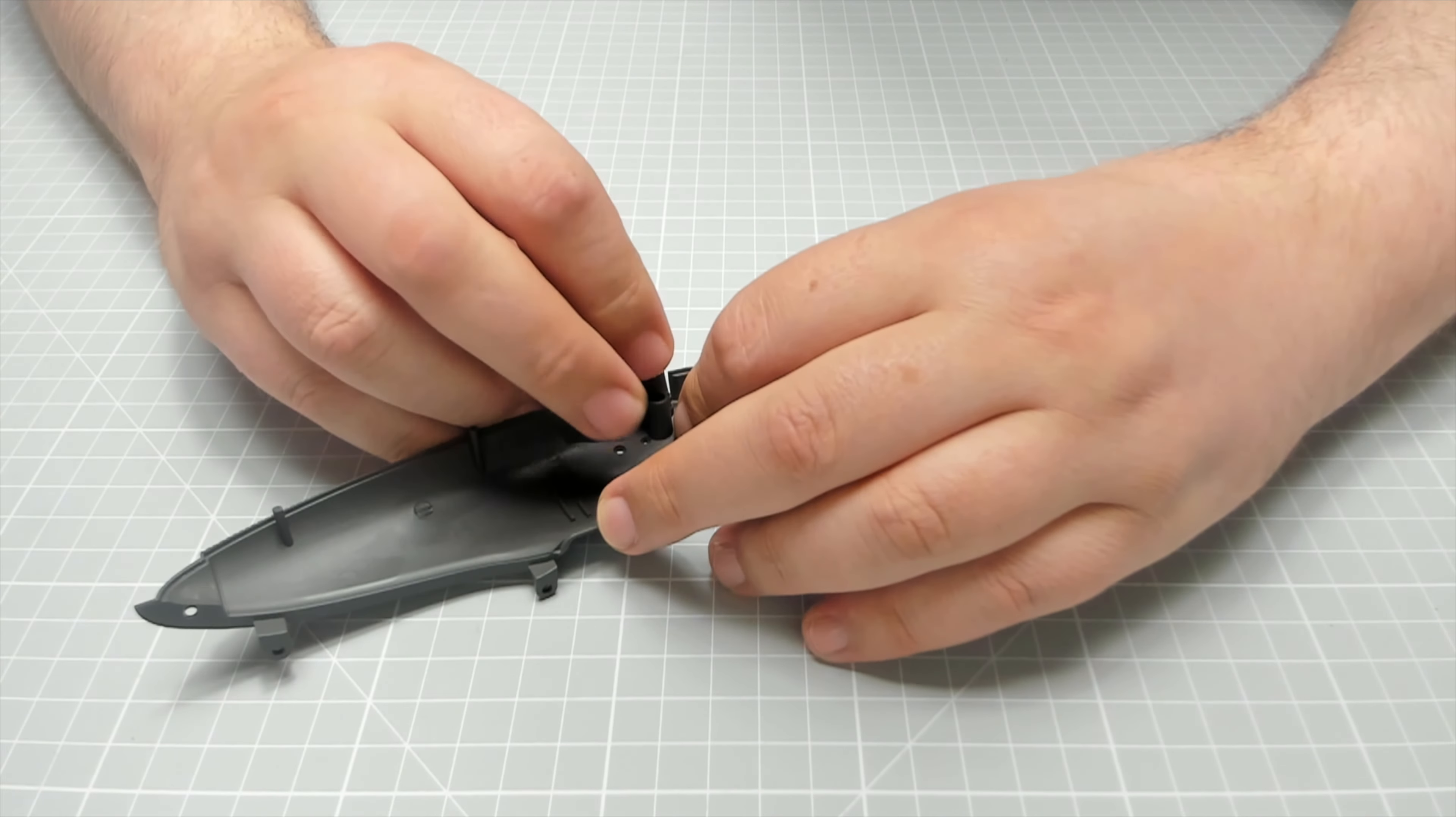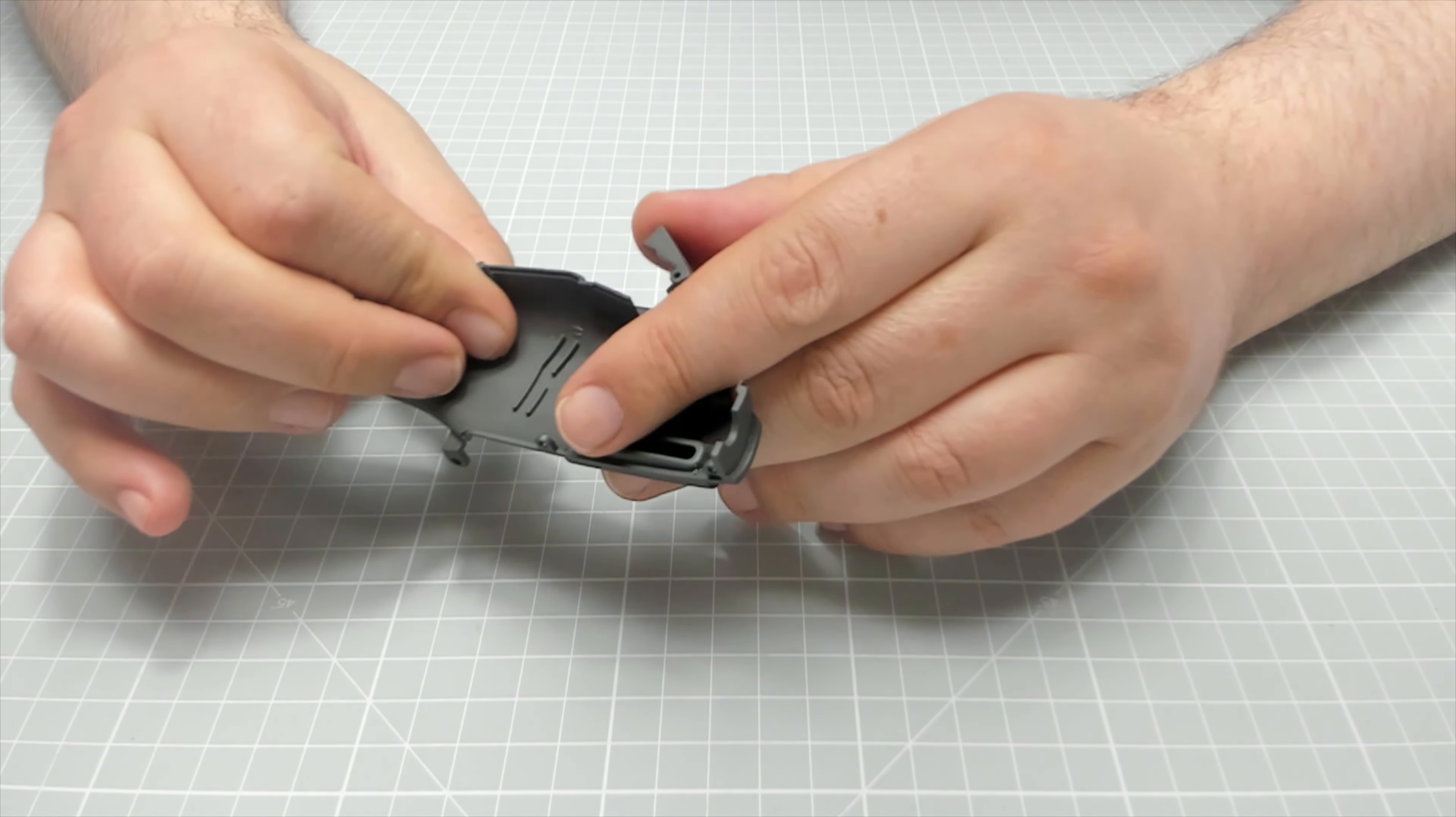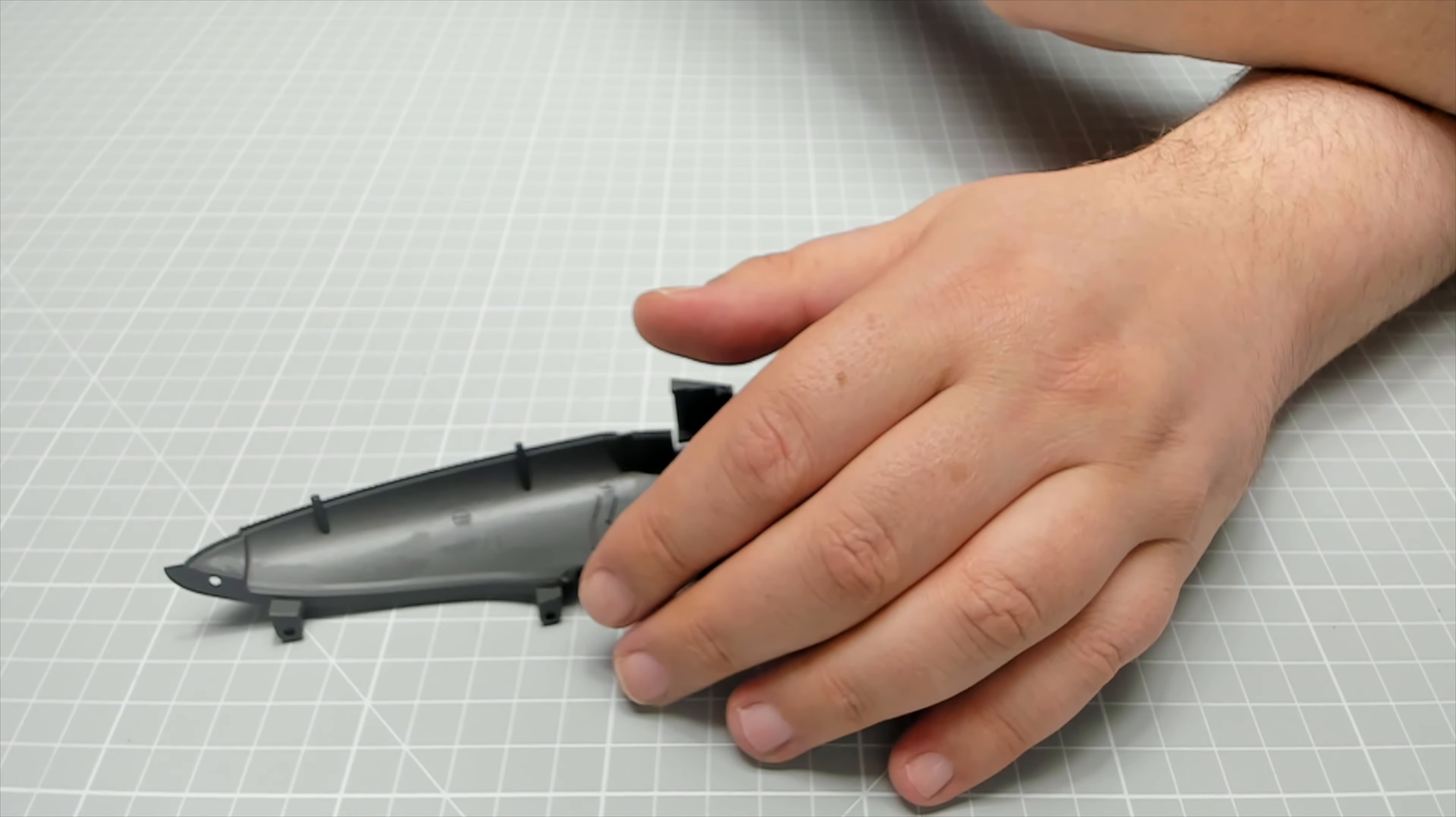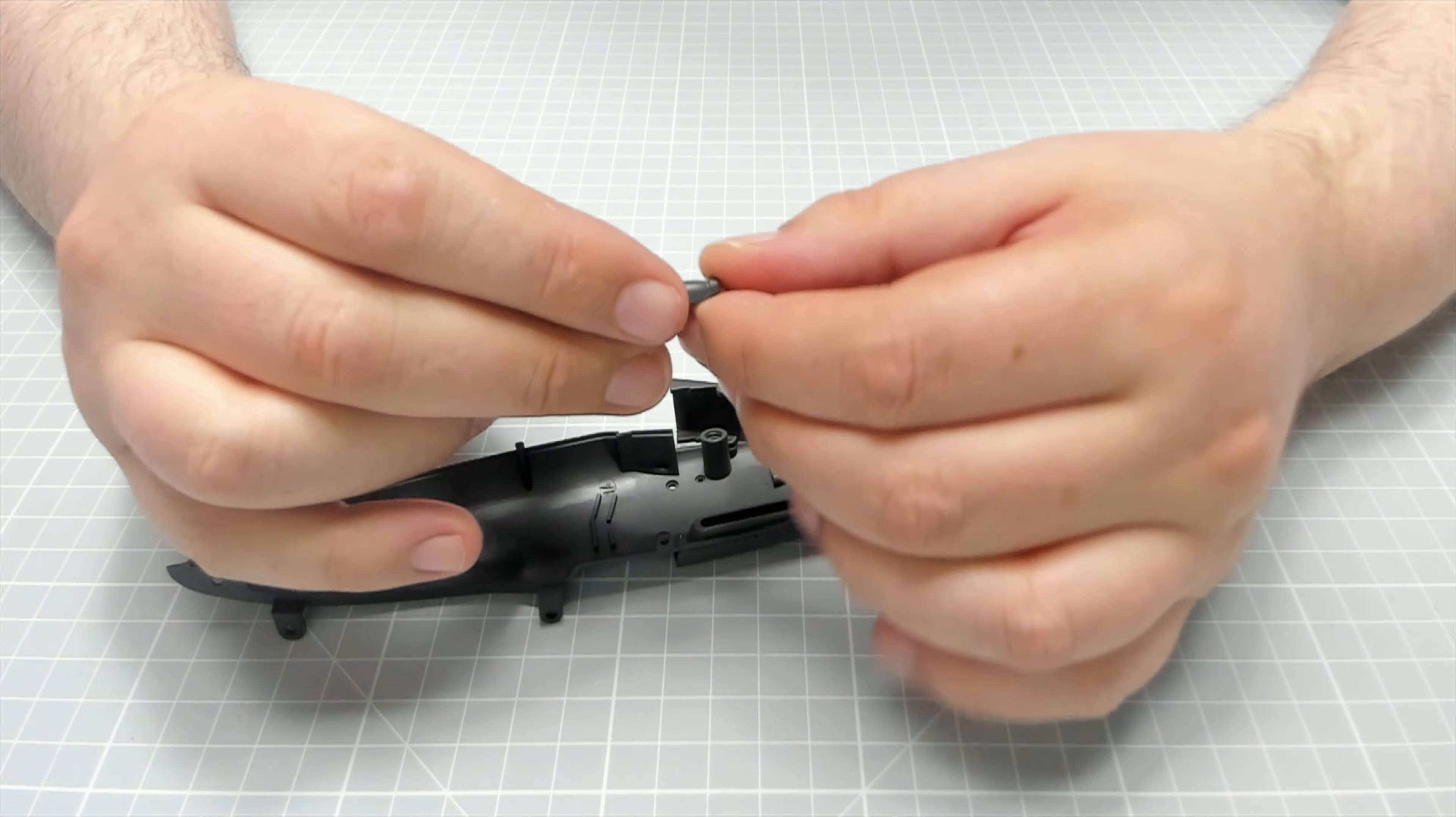Next, what we need to do is we need this bit here. Now this is literally just going to fit on to the peg. There's no glue needed, but I'm going to put this on just to show you. I'm going to take it, I think, because it keeps holding on. Well, it might do. It's all about staying in place. It's quite tight.